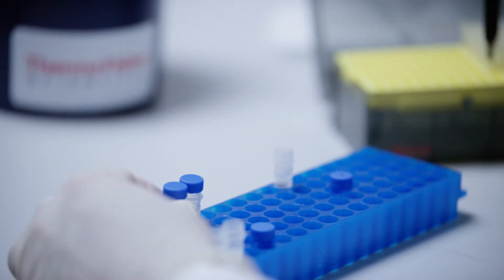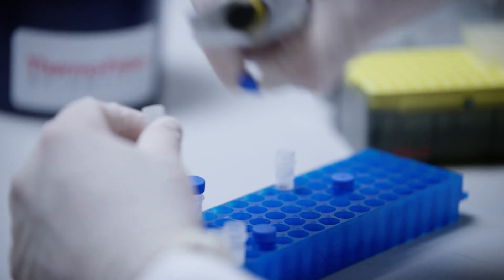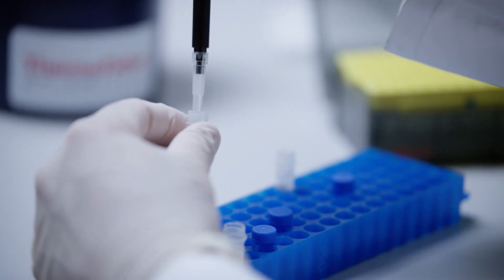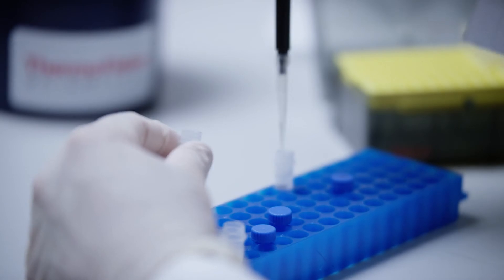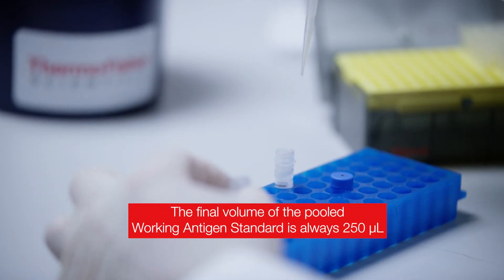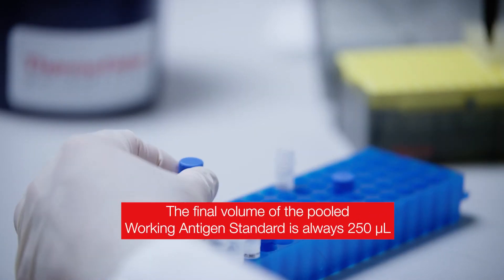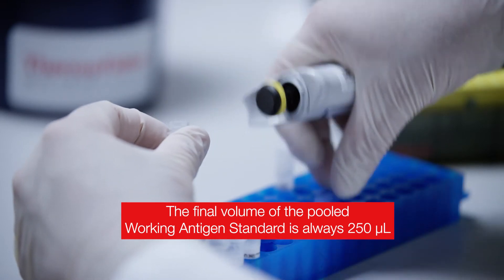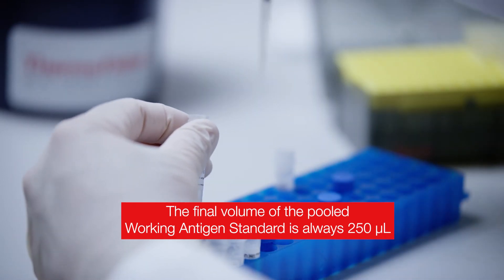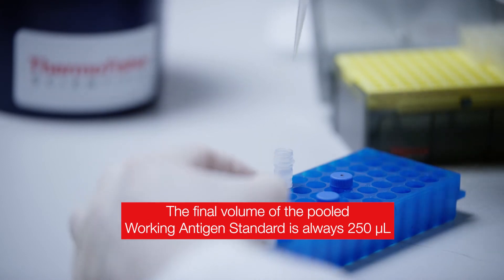Pool the contents from each of the remaining four antigen standard vials into the sixth standard vial so that the final volume is 250 microliters. Pooling of antigen standards to prepare the working antigen standard must never exceed 250 microliters.